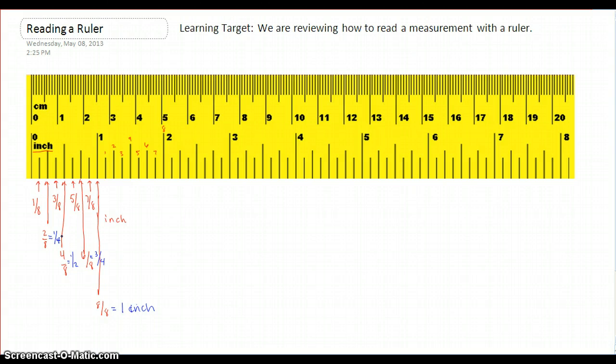So as you work through a ruler, you have to first know how many hash marks are between the whole numbers, and that tells you what the ruler is counting by. Not all rulers count by eighths. Some of them will count by sixteenths, some of them only count by fourths. So you have to know how many sections there are first.